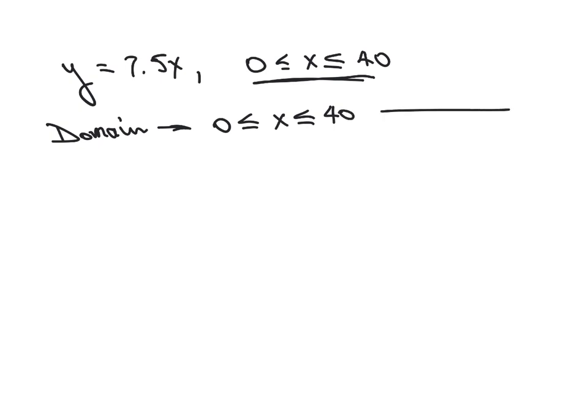So if we had a number line here, zero to 40, X could be here, here, and all numbers in between. So that's the range. Or, I'm sorry, the domain.